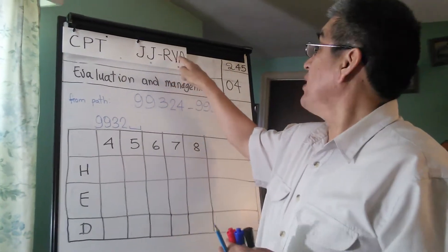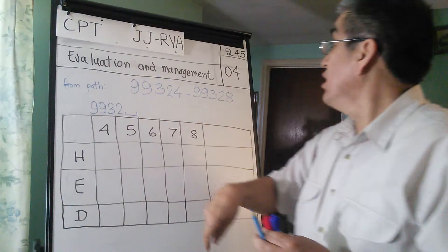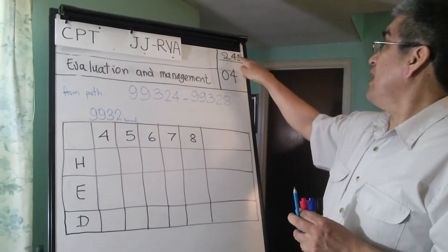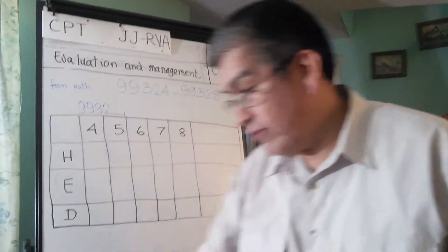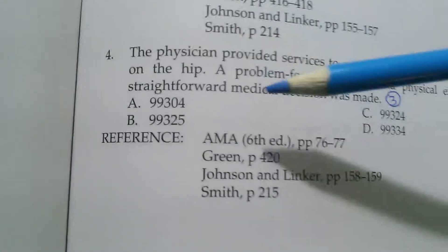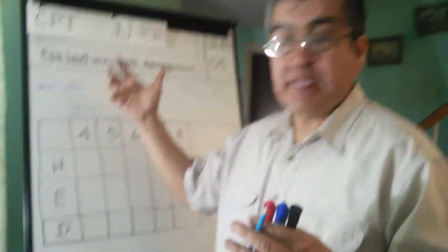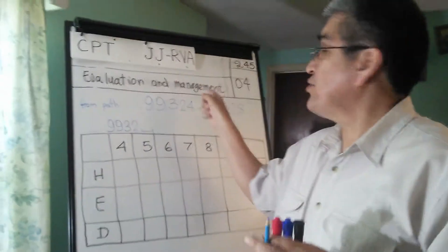The coding system is CPT, JJ is the name of our company, and RVA is the book I just showed you. This is page number 245 from that book — you can see it right here — and the exercise that we're doing is 04, right here.